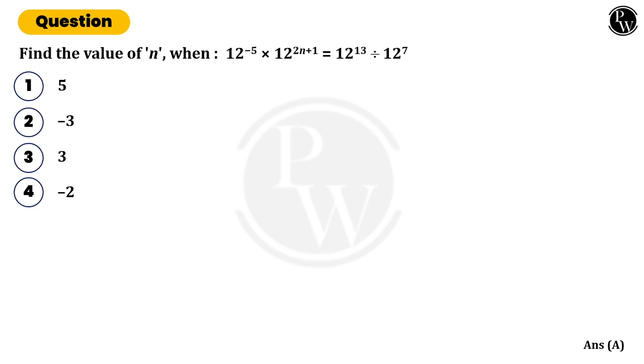Hello everyone. Find the value of n when 12 to the power of minus 5 into 12 to the power of 2n plus 1 is equal to 12 to the power of 13 divided by 12 to the power of 7.